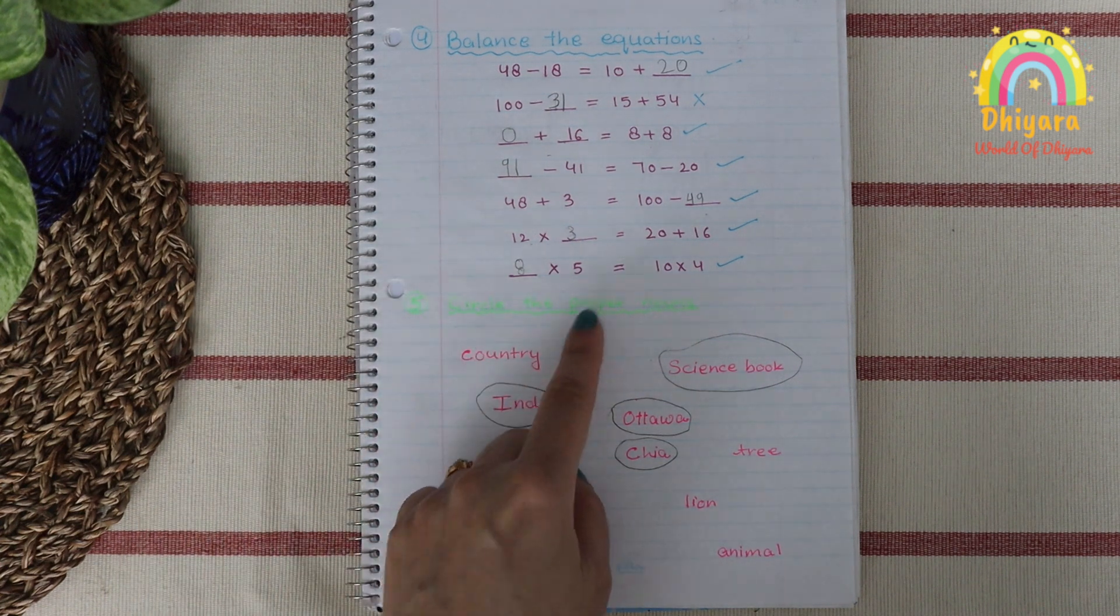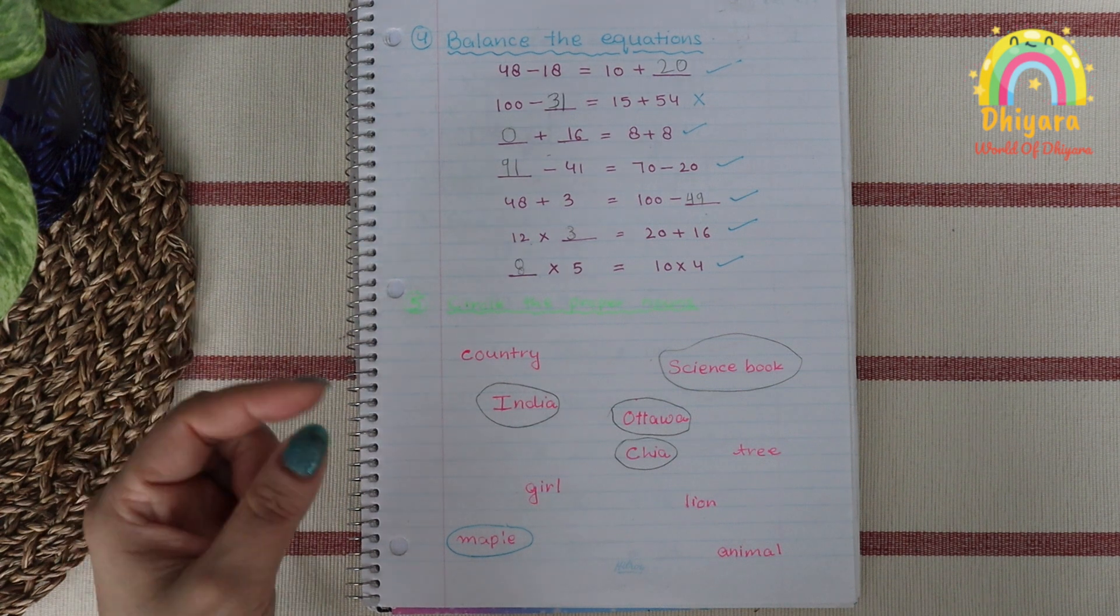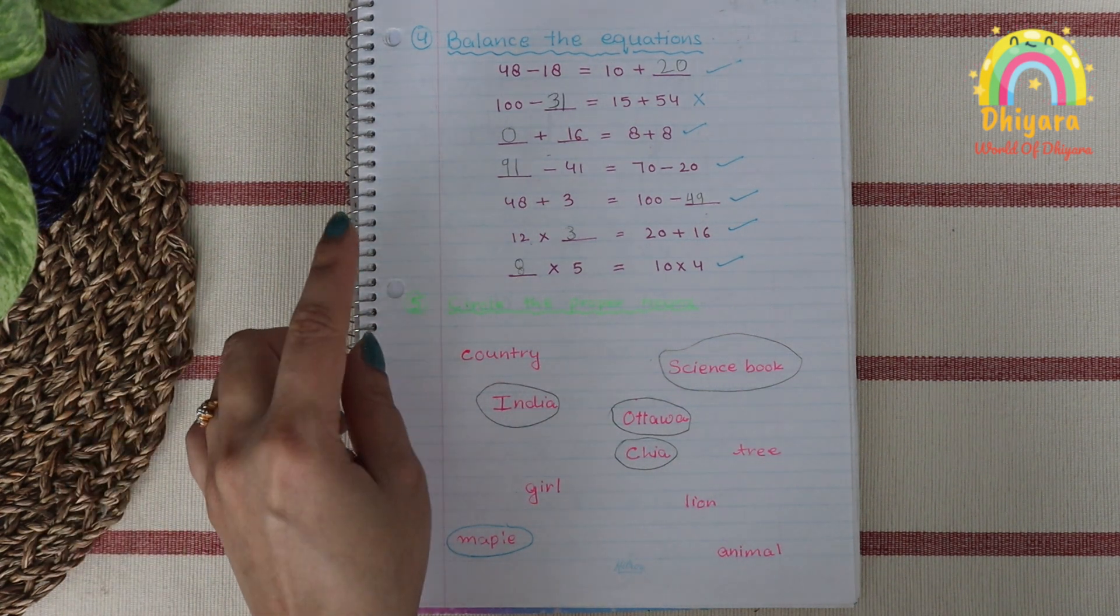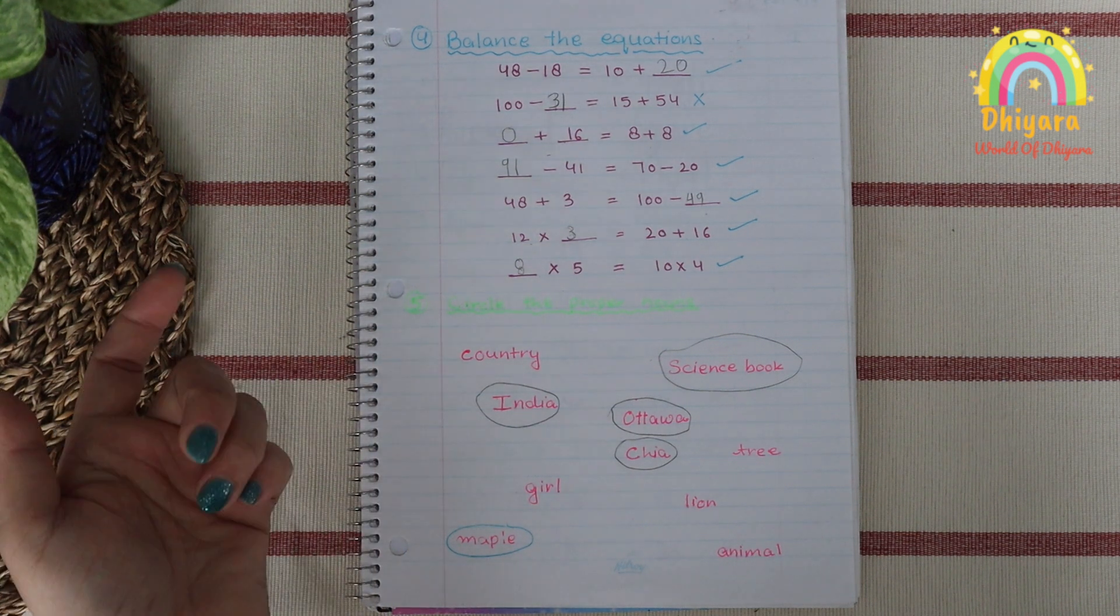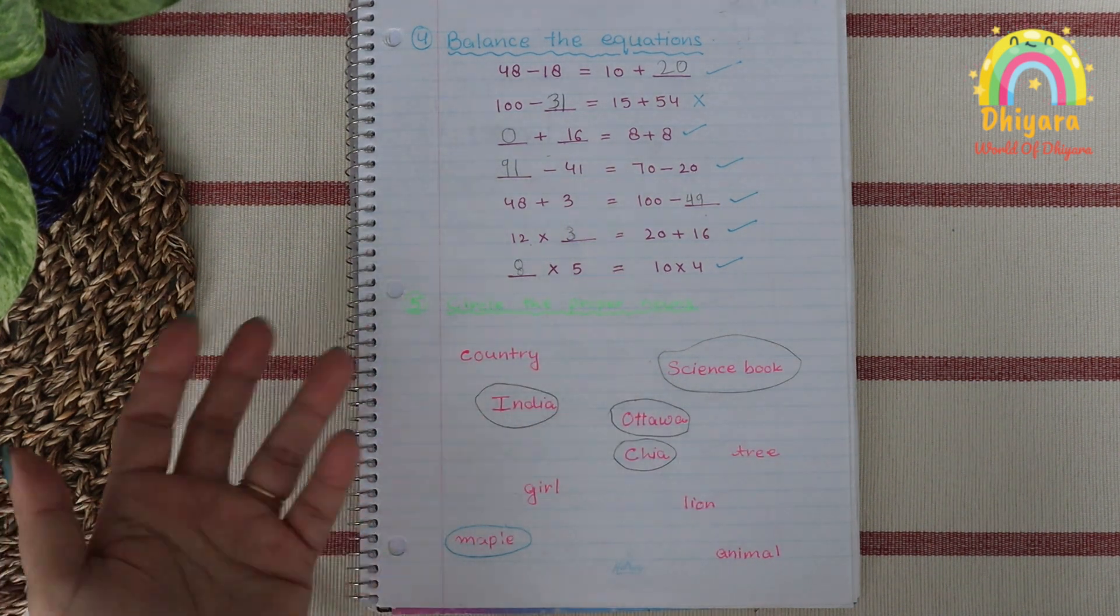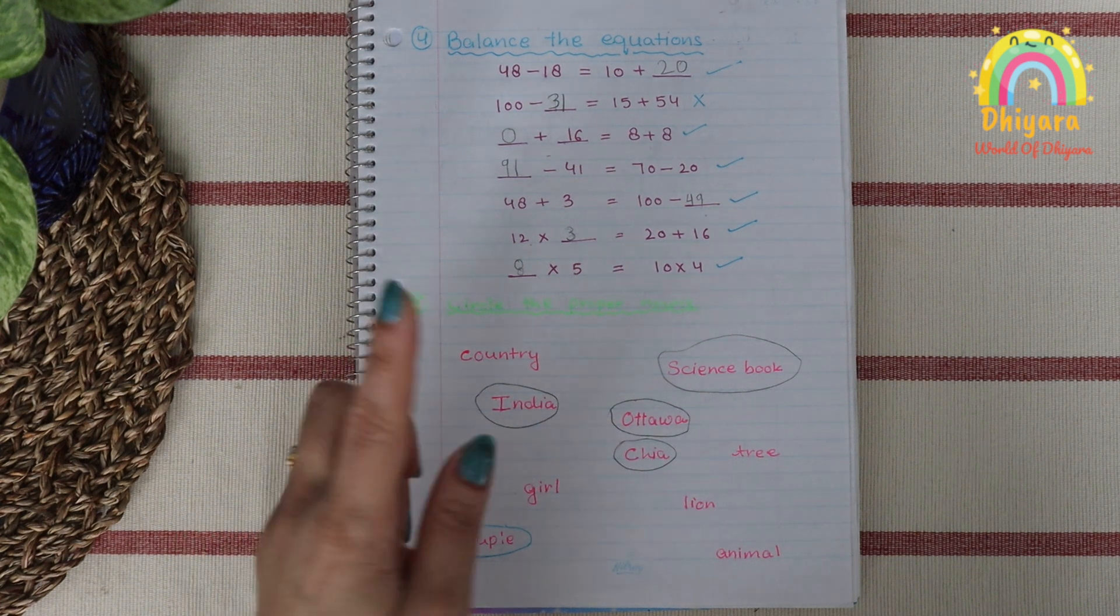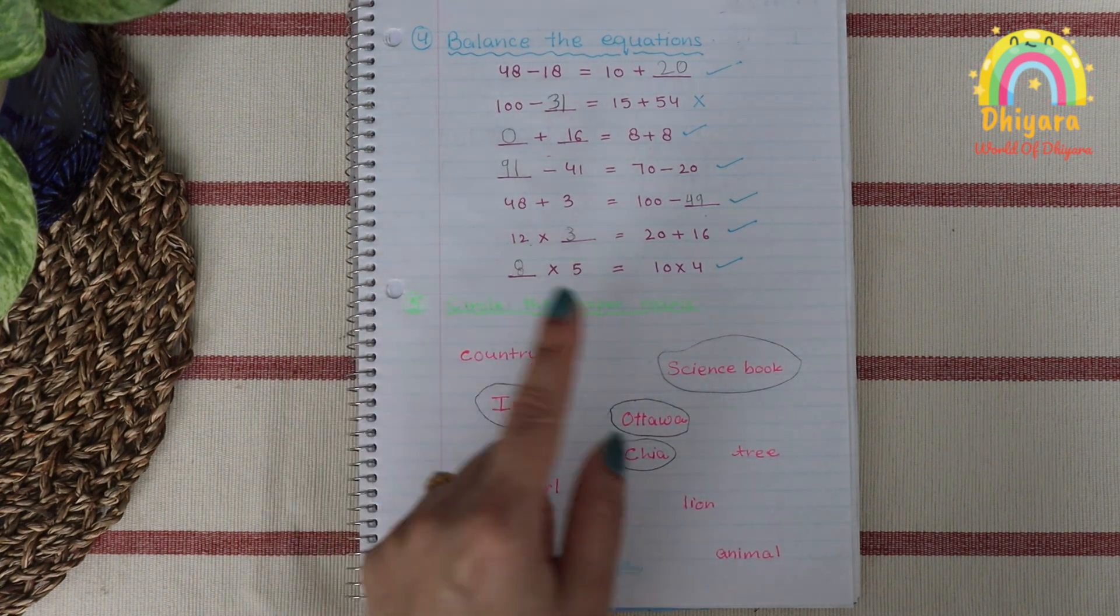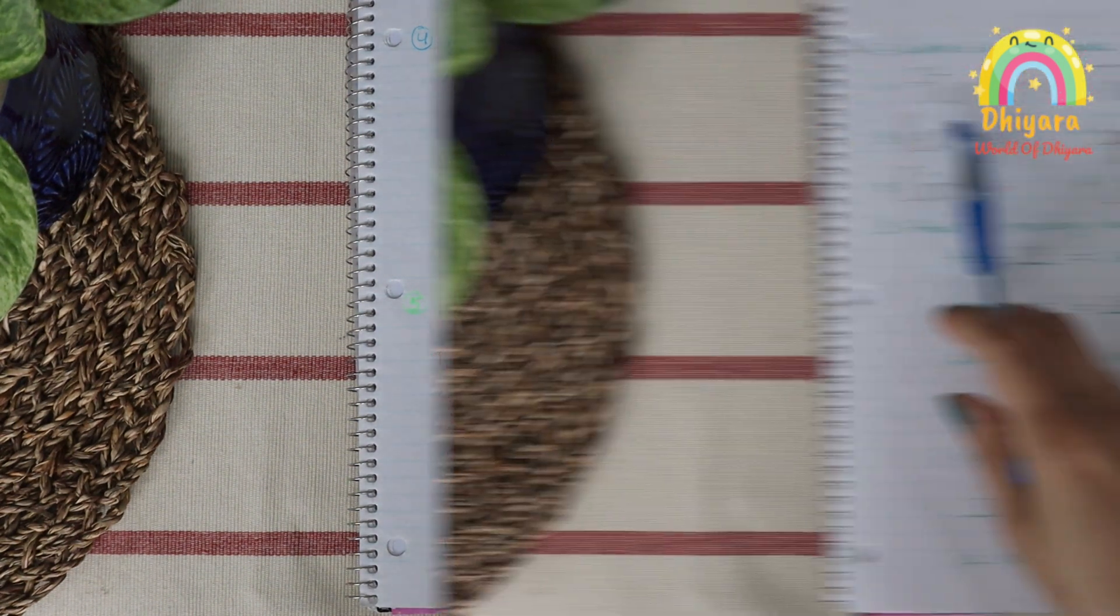Below this we have circle the proper nouns. This week we are studying common nouns and proper nouns. If you have not checked the nouns video, I will give you a link in the description, so make sure to check it out. What you have to do is write some common nouns and proper nouns here, and then circle the proper nouns. I have given the same activities for common nouns.